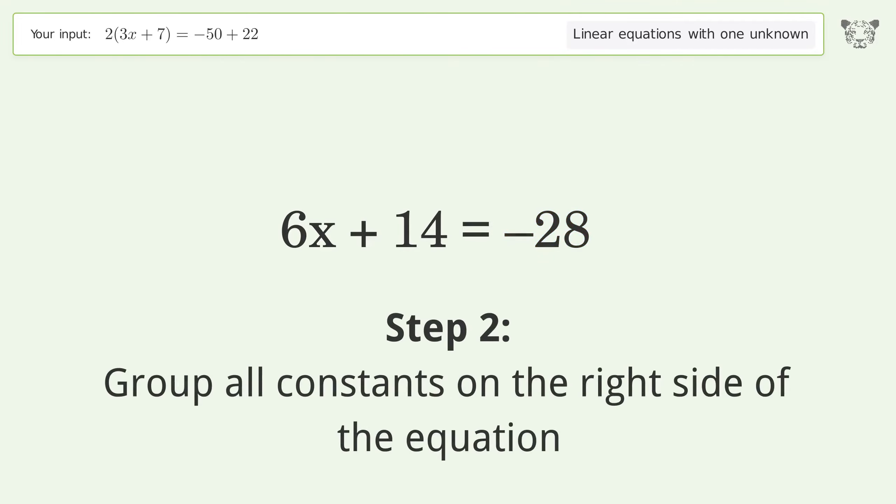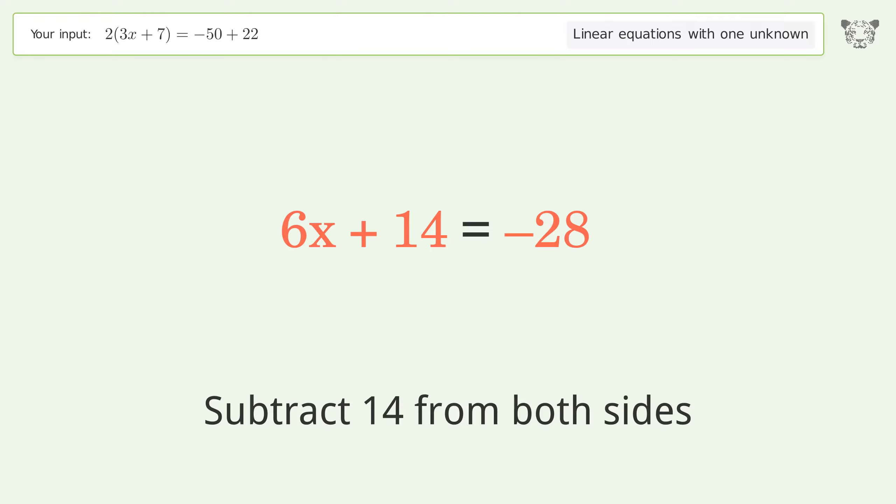Group all constants on the right side of the equation. Subtract 14 from both sides.